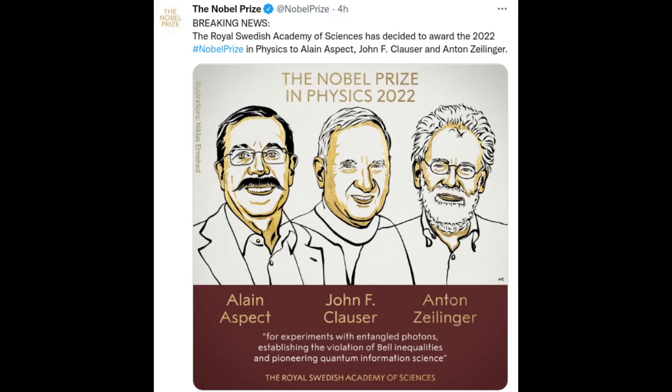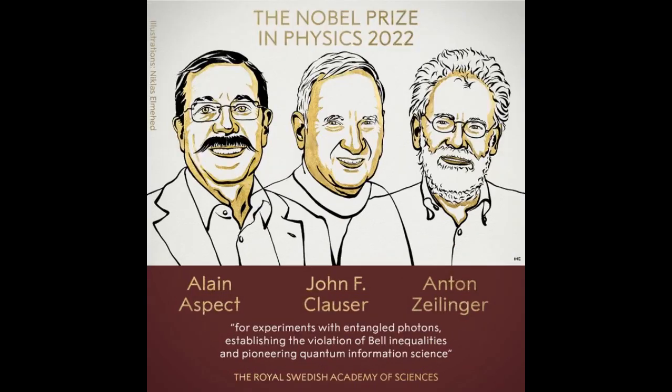The Royal Swedish Academy of Sciences has decided to award the 2022 Nobel Prize in Physics to Alan Aspect, John F. Clauser, and Anton Zeilinger for experiments with entangled photons,